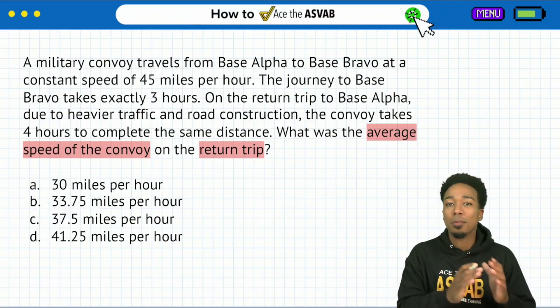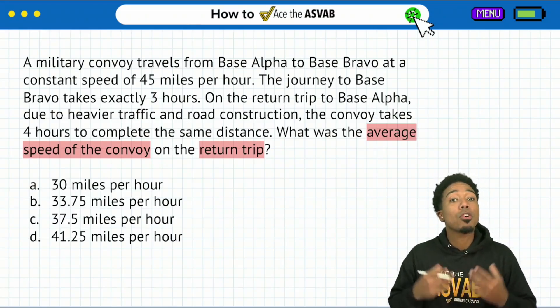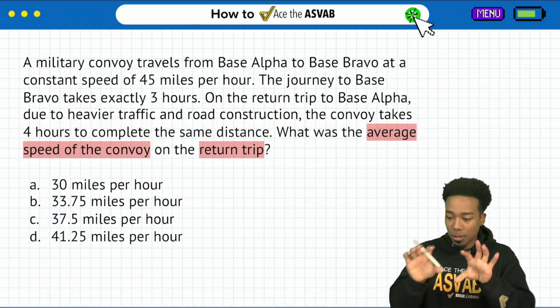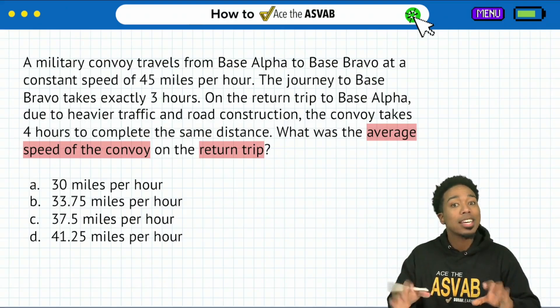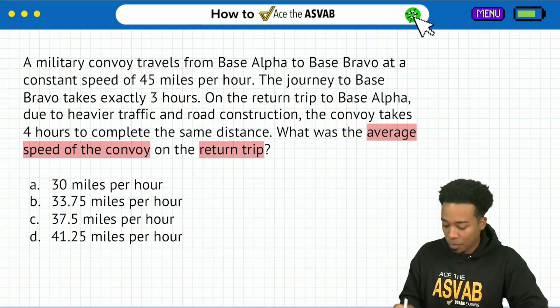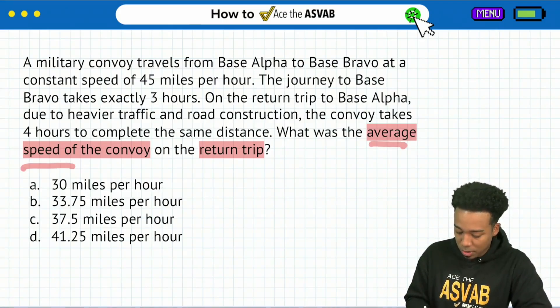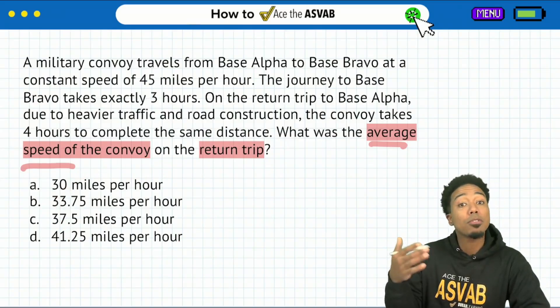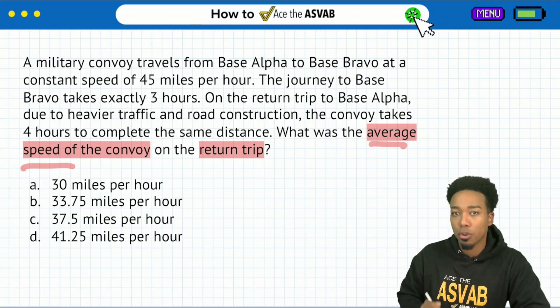Because when we take a look at the information, you're going to notice that there are two scenarios being described, and the accuracy in which we write these notes is really going to spell success for us. So let's avoid those common mistakes here. We want average speed, and we see that it's going to be in miles per hour.